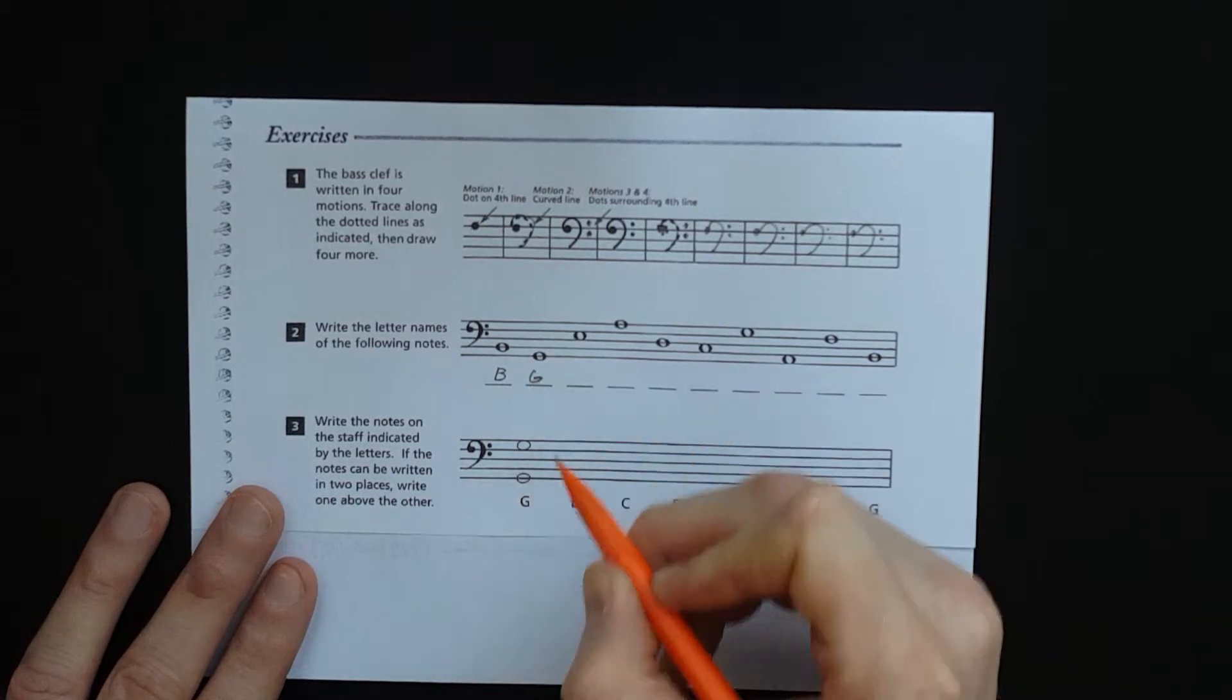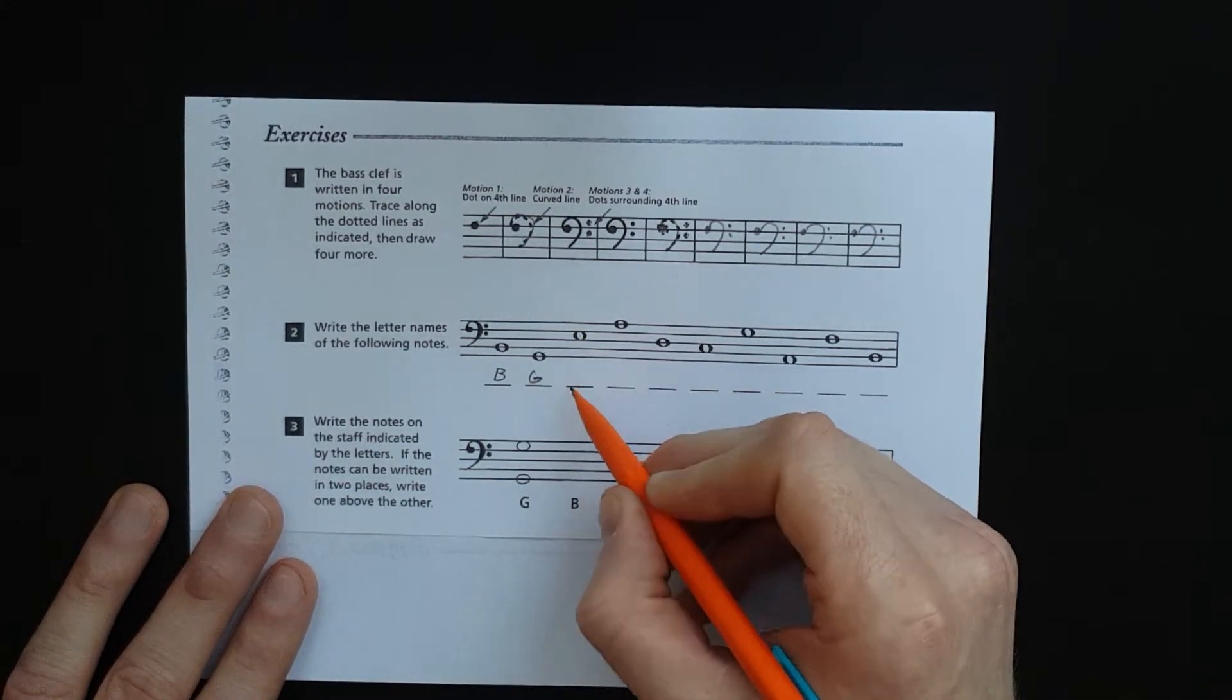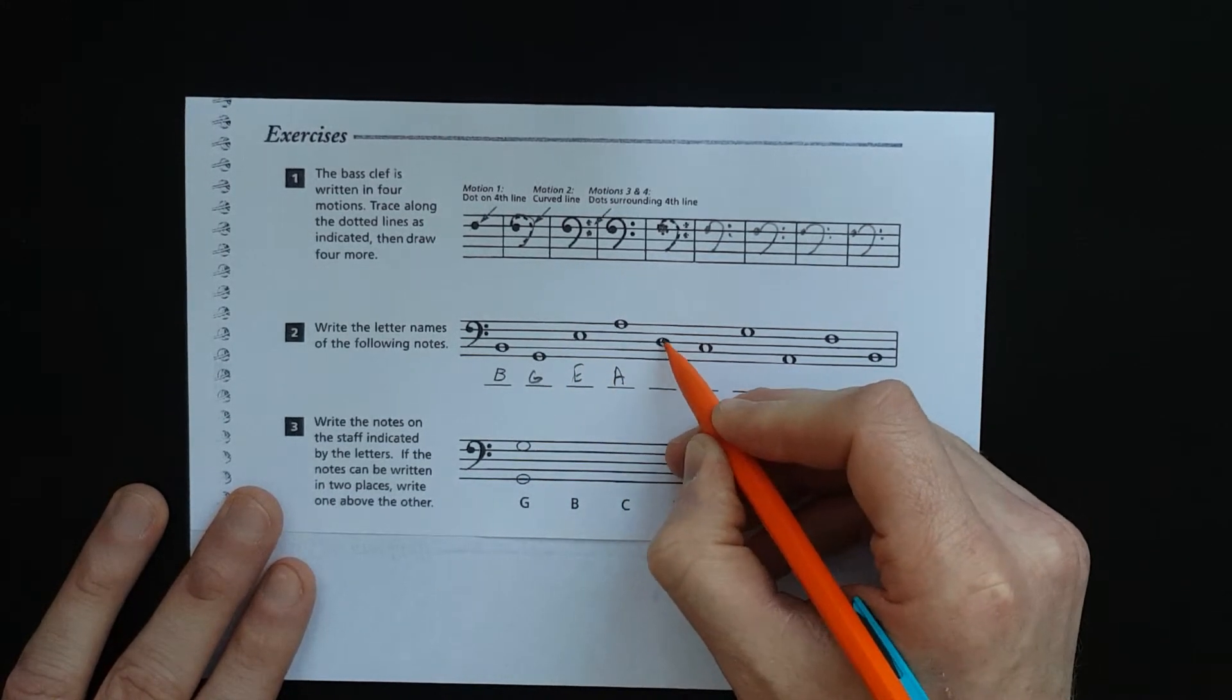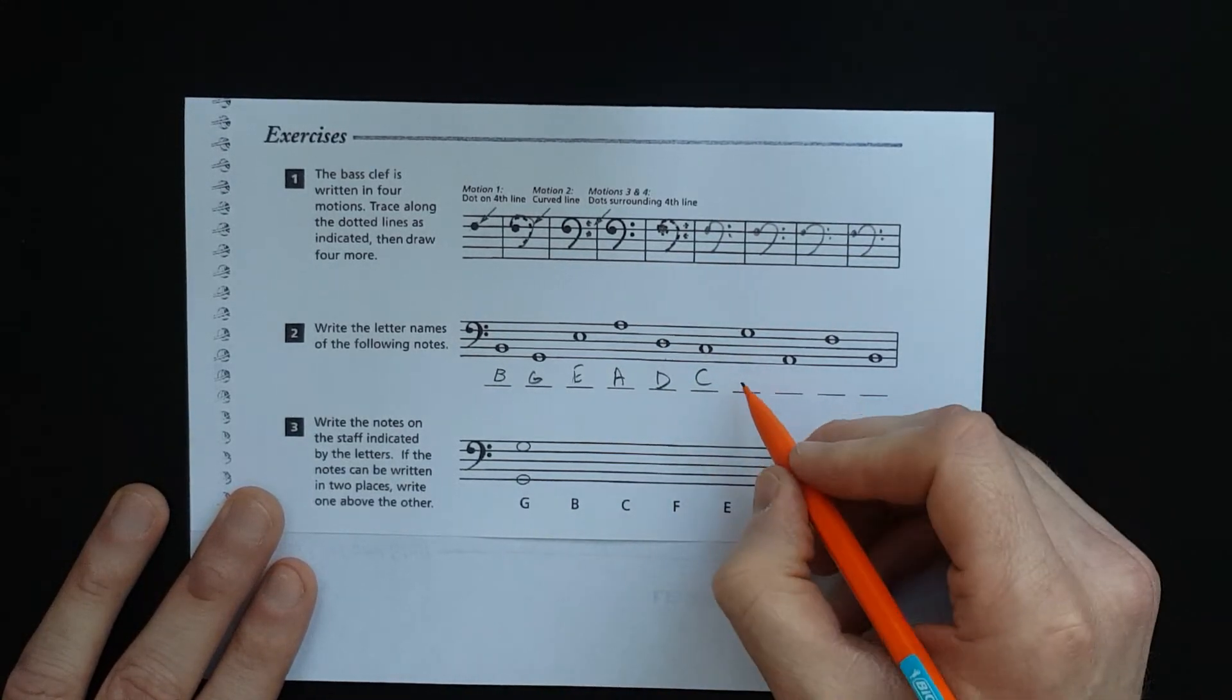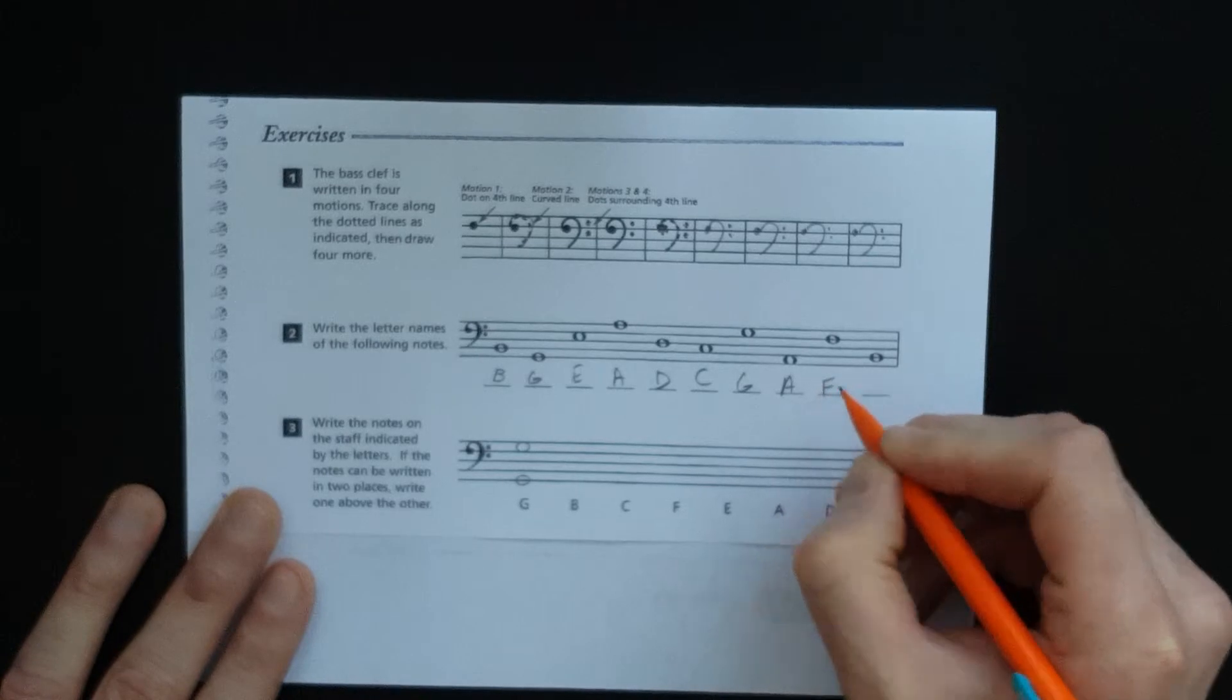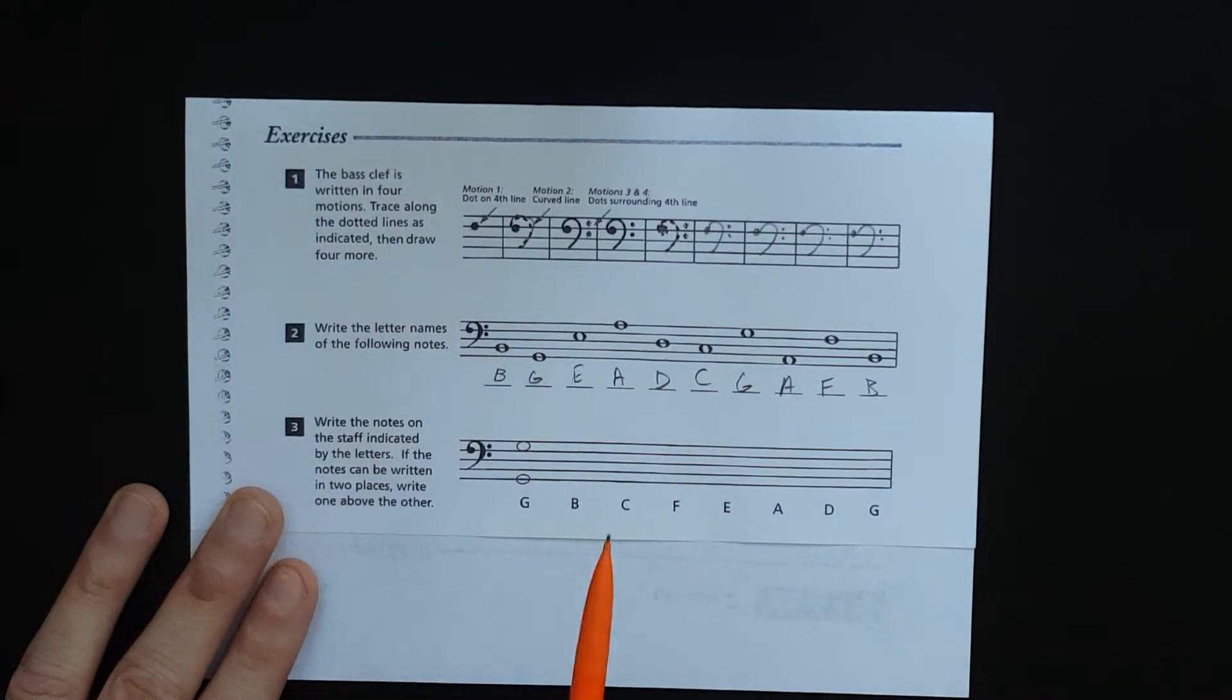So G is our first line, All Cows Eat for the space, Grandma Buys Dresses For All. That's G, that's A, B is Dresses, F—and then you've got B there. All right, number three.